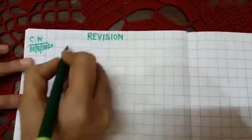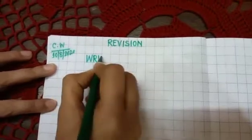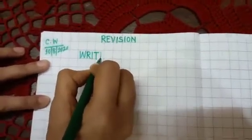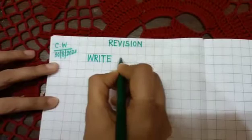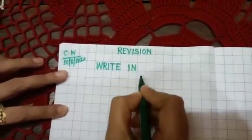Okay children, written. Then leave one box and write here. Write W, R, I, T, E. Write I, N, in.